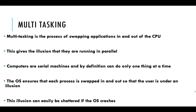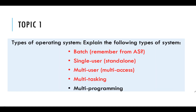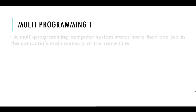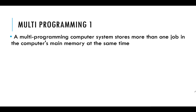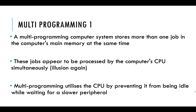What about the difference between multitasking and multiprogramming? Multiprogramming computer systems store more than one job in main memory at the same time. These jobs appear to be processed by the CPU simultaneously — that illusion again. It ensures the correct data is kept in RAM at any time so it can be quickly loaded into the CPU, making sure the processor does not sit idle waiting for a slower peripheral to retrieve data.